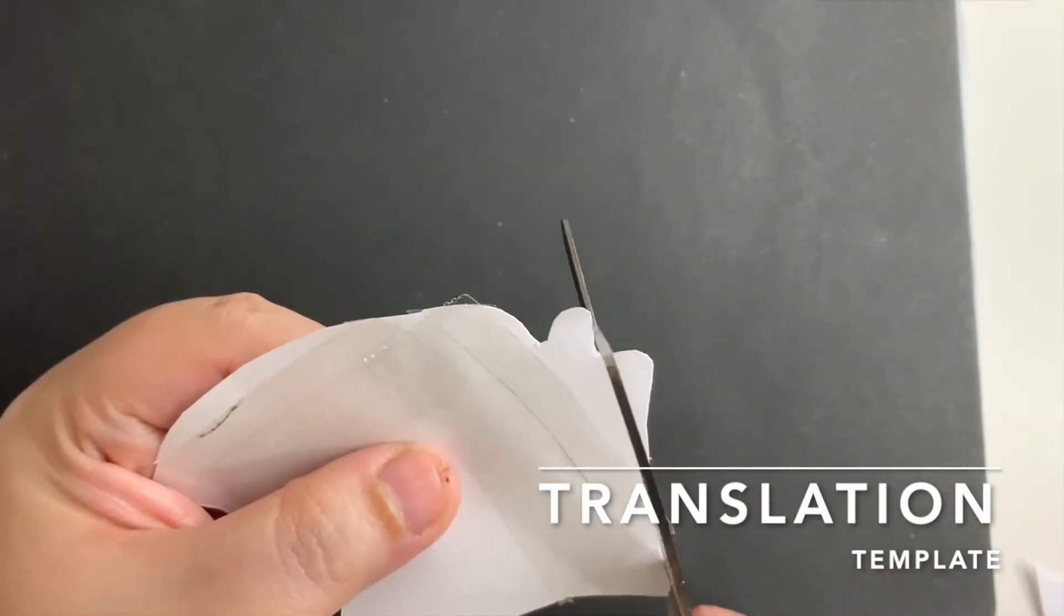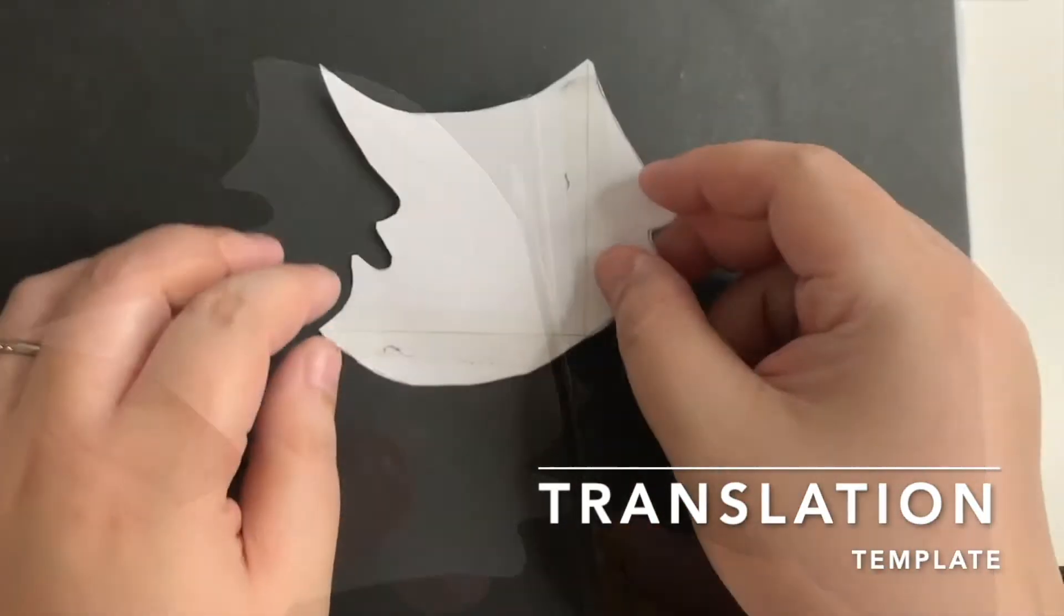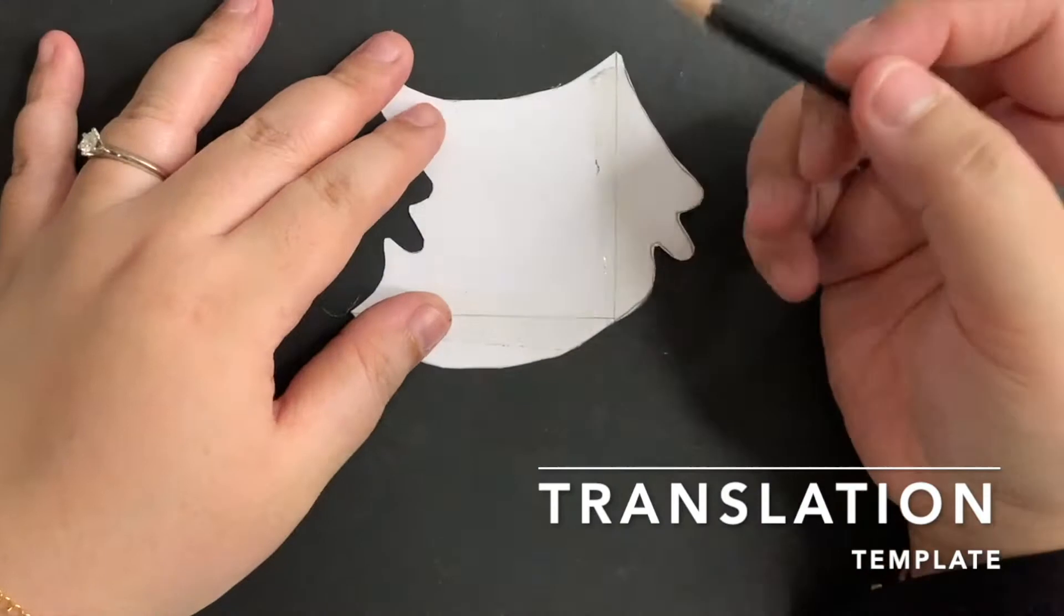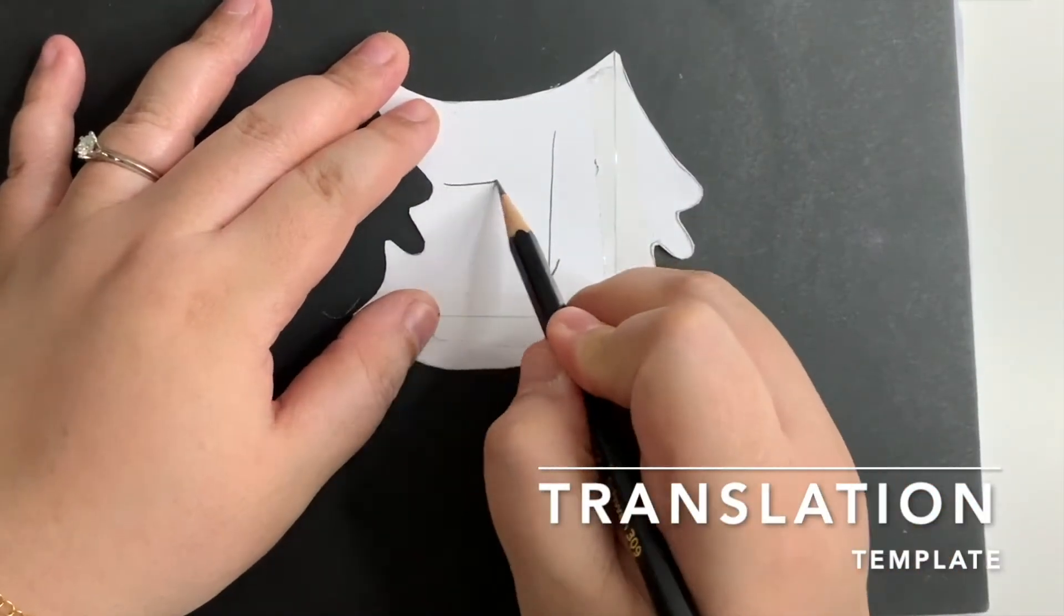Next, neaten the excess tapes. This will change the shape of the template if you do not trim the excess tapes. I'm going to draw these arrows to make it easier for you to refer.